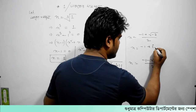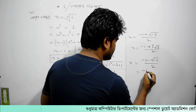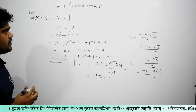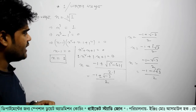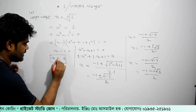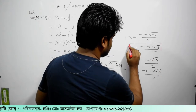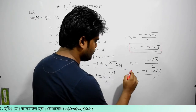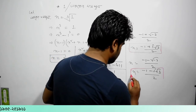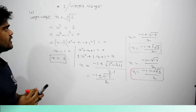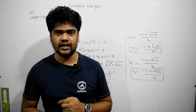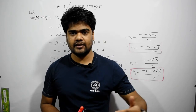x equal to minus 1 plus i root over 3 divided by 2. So we found three values — the three cube roots of 1. One cube root is x equal to 1; another cube root is x equal to minus 1 plus i root over 3 by 2; and another is x equal to minus 1 minus i root over 3 by 2. So step by step we have found all three cube roots of unity.